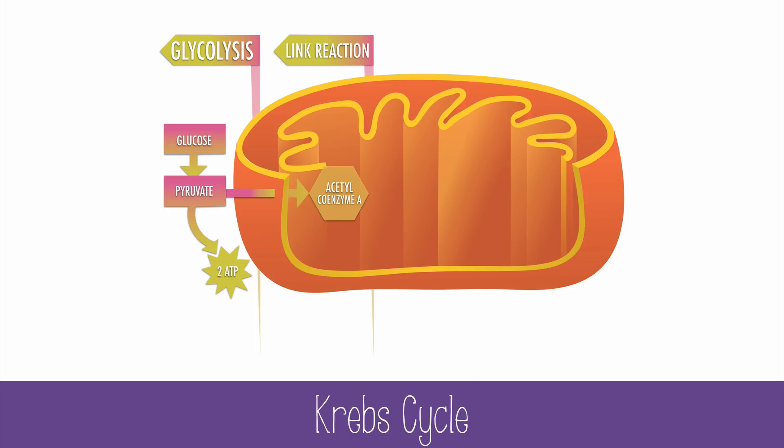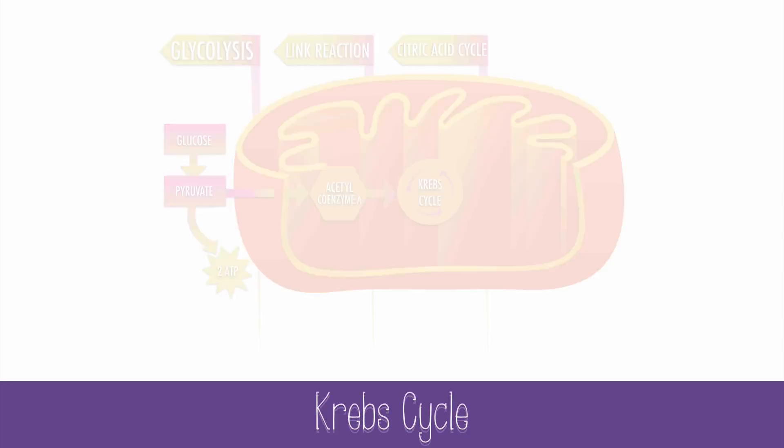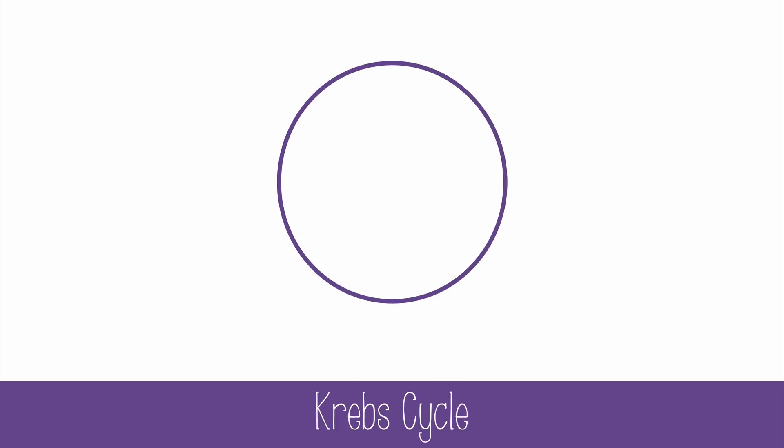Acetyl-CoA will be used in the next step, which has many names. The Krebs cycle is also called the citric acid cycle and the tricarboxylic acid cycle. All of these names refer to the same process, which occurs in the matrix of the mitochondria. The Krebs cycle is another big enzymatic pathway like glycolysis, but this one occurs in a cycle, creating end products that can be used again at the beginning of the cycle.